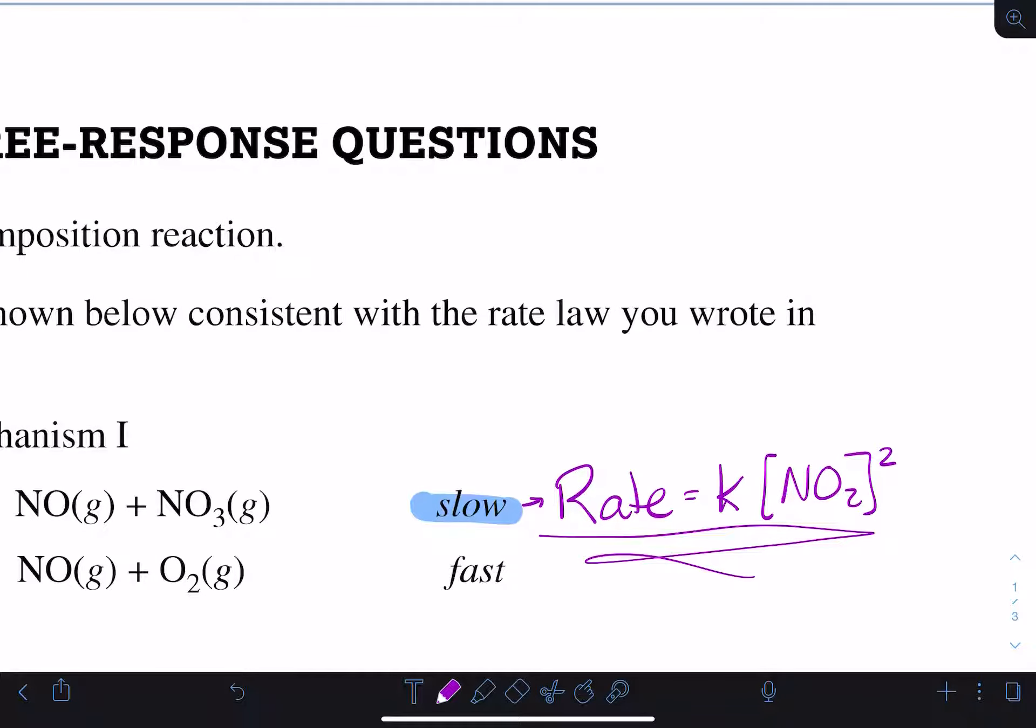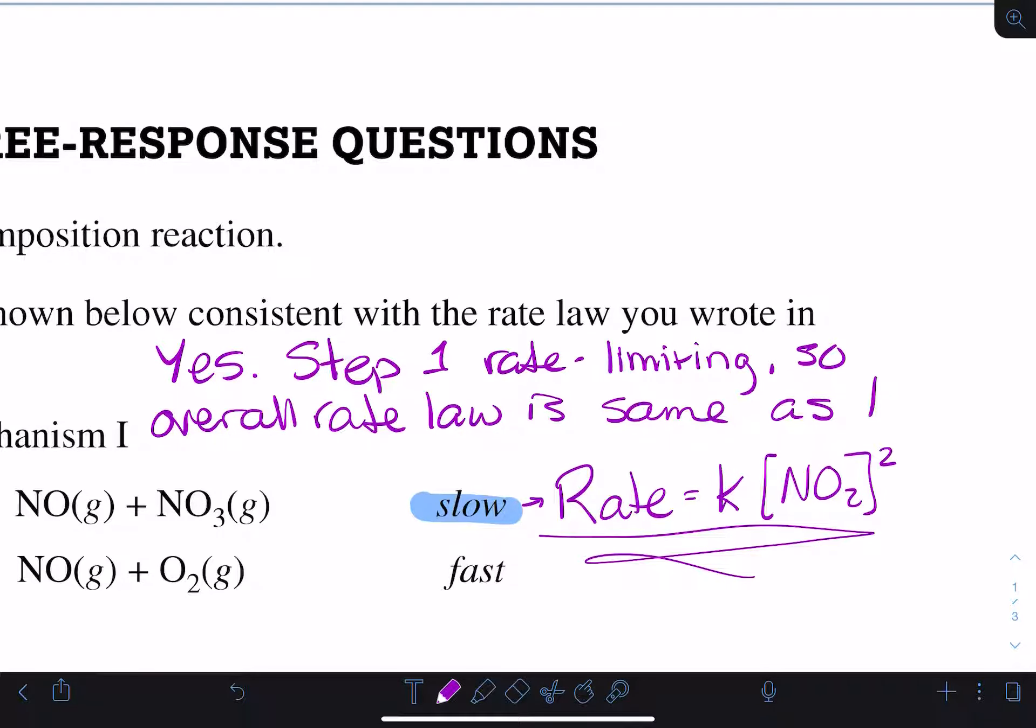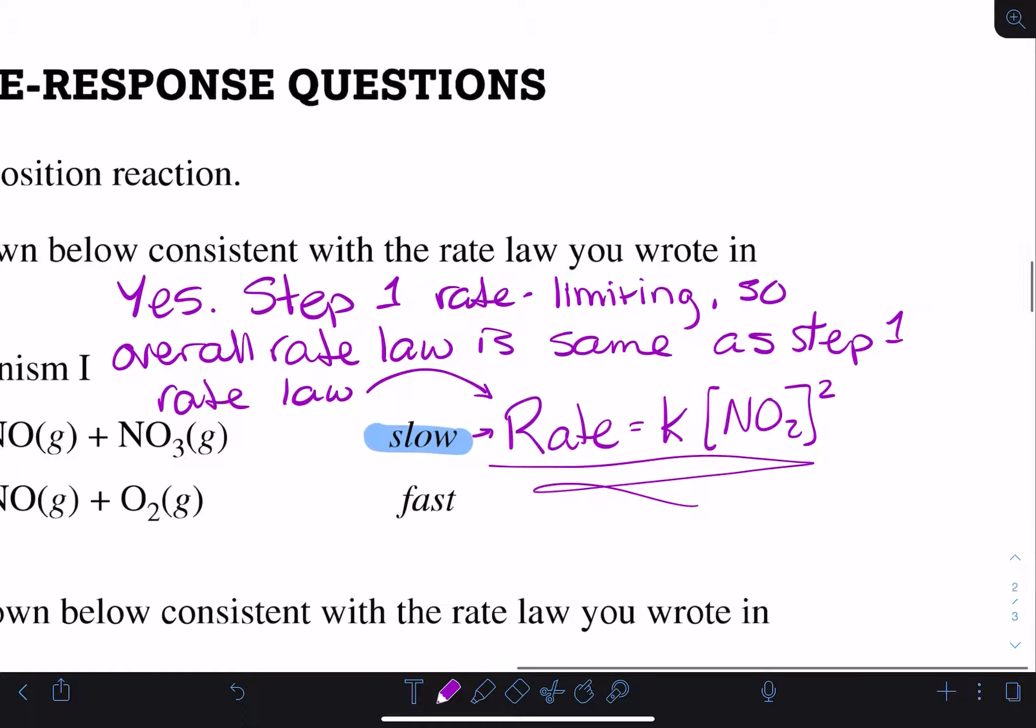This is the same as the rate law that we wrote in part B, so this one is consistent. Mechanism 1 is a yes. Since step 1 is rate limiting or rate determining, our overall rate law is the same as the step 1 rate law, which is the same as from part B.